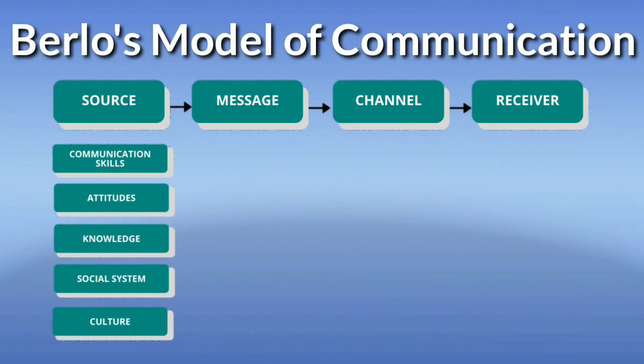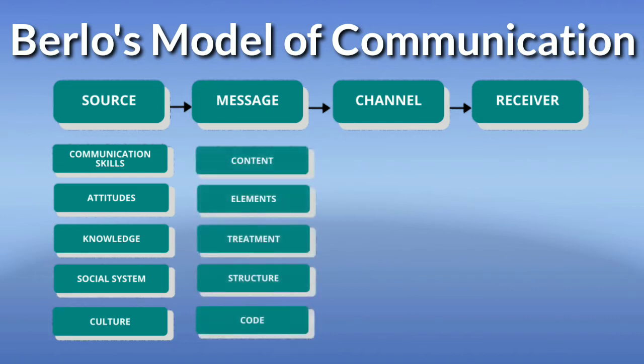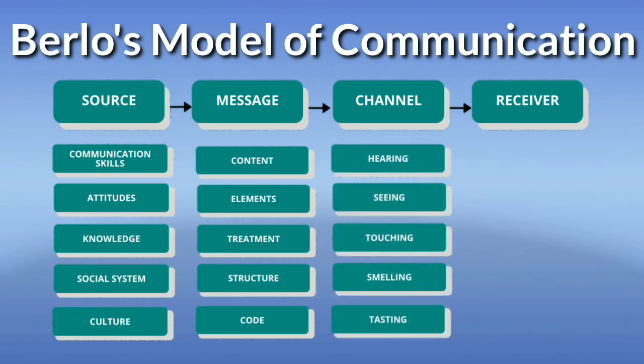There are factors that affect the communication process. On the source, we have communication skills, attitudes, knowledge, social system, and culture. On the message, there are content, elements, treatment, structure, and code. On the channel, we have seeing, hearing, touching, smelling, and tasting — the five senses that serve as the media to deliver the message to the receiver.